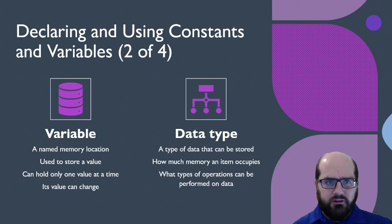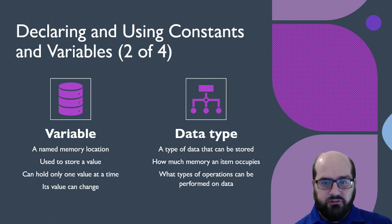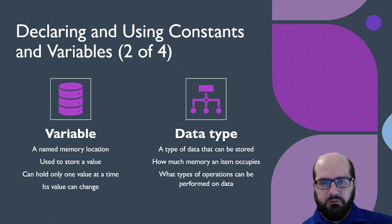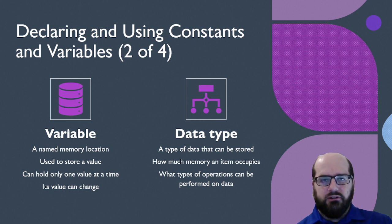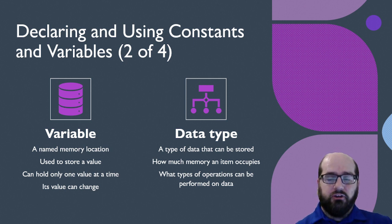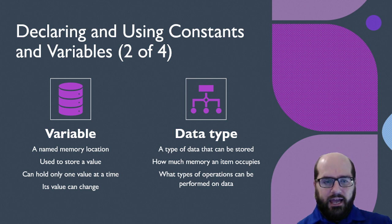When we talk about declaring and using constants and variables, we need to discuss a couple of things — what is a variable, and what is a data type. A variable is like a little box in memory where we carve out a piece of memory and we name it. So we say this particular part of memory is named like 'a', and it's used to store a value. It can store another variable or it can store a value, and it can only hold one value at a time.